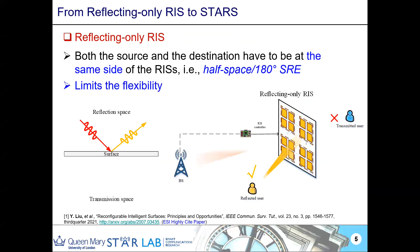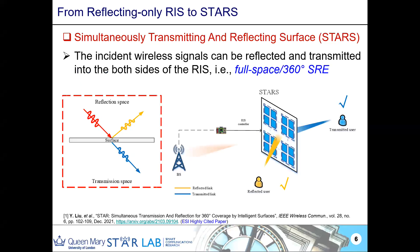My main research contribution is going from reflecting-only RIS to STARS. With a reflecting-only RIS, if a user is located on the other side of the surface, it cannot be served — which limits flexibility. With STARS, we can also serve users located on the other side. That's the core idea — I could finish my talk here!